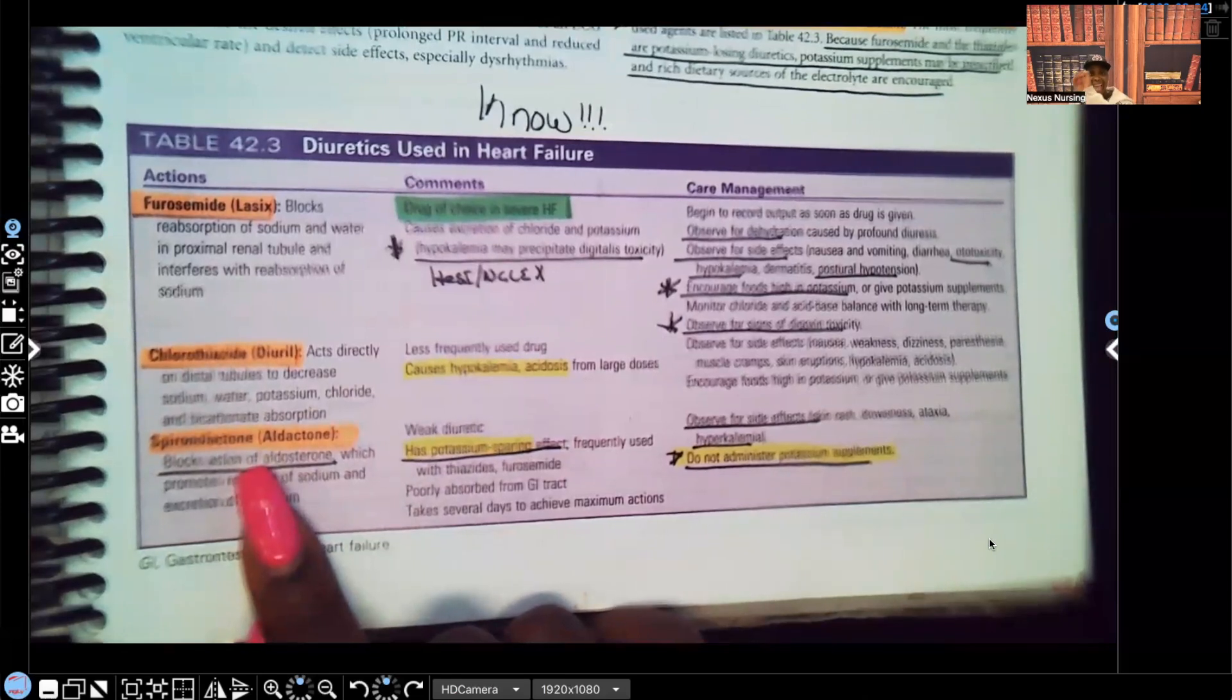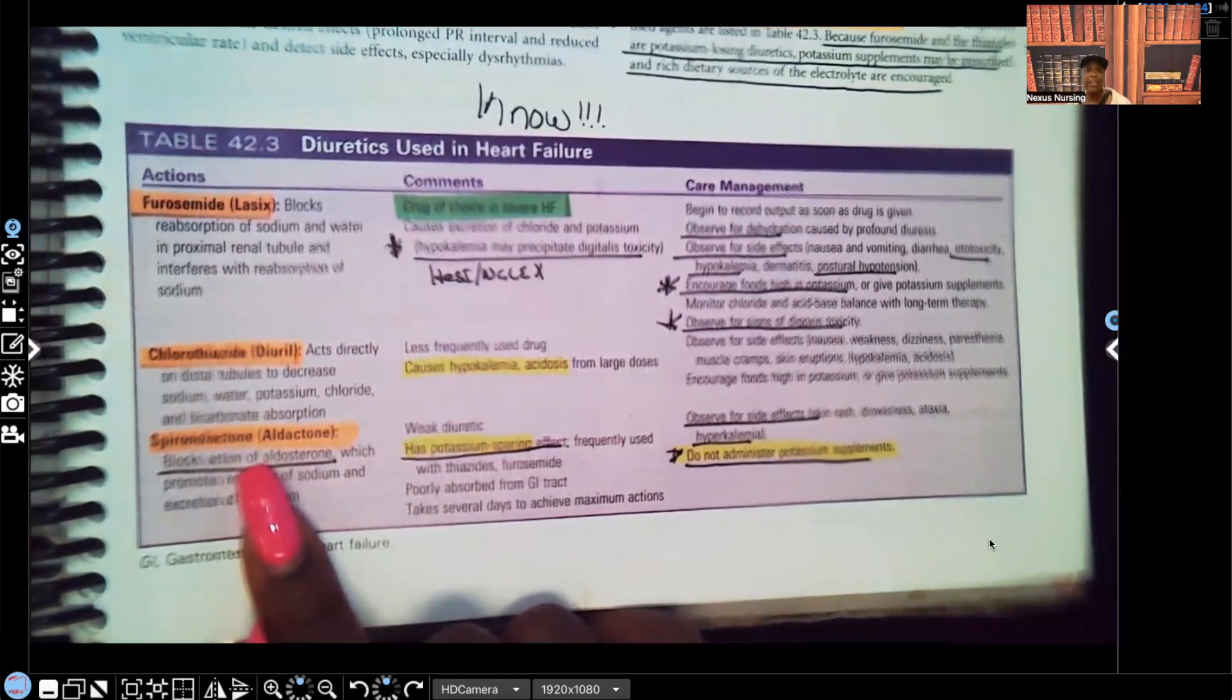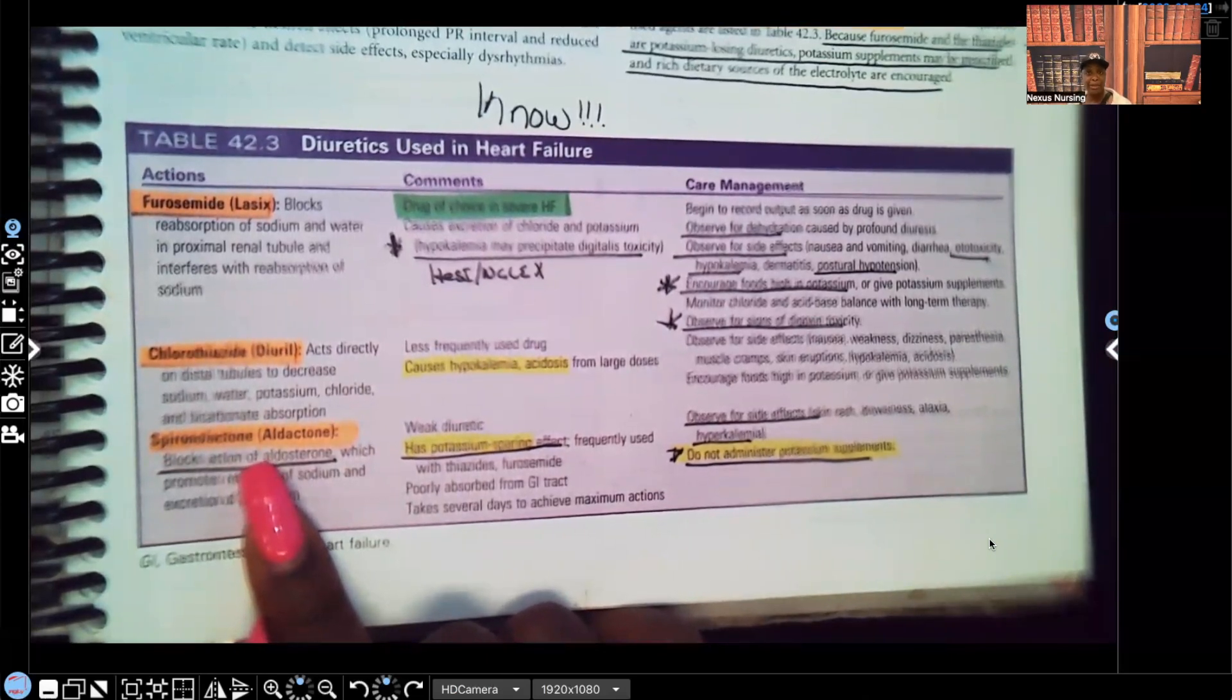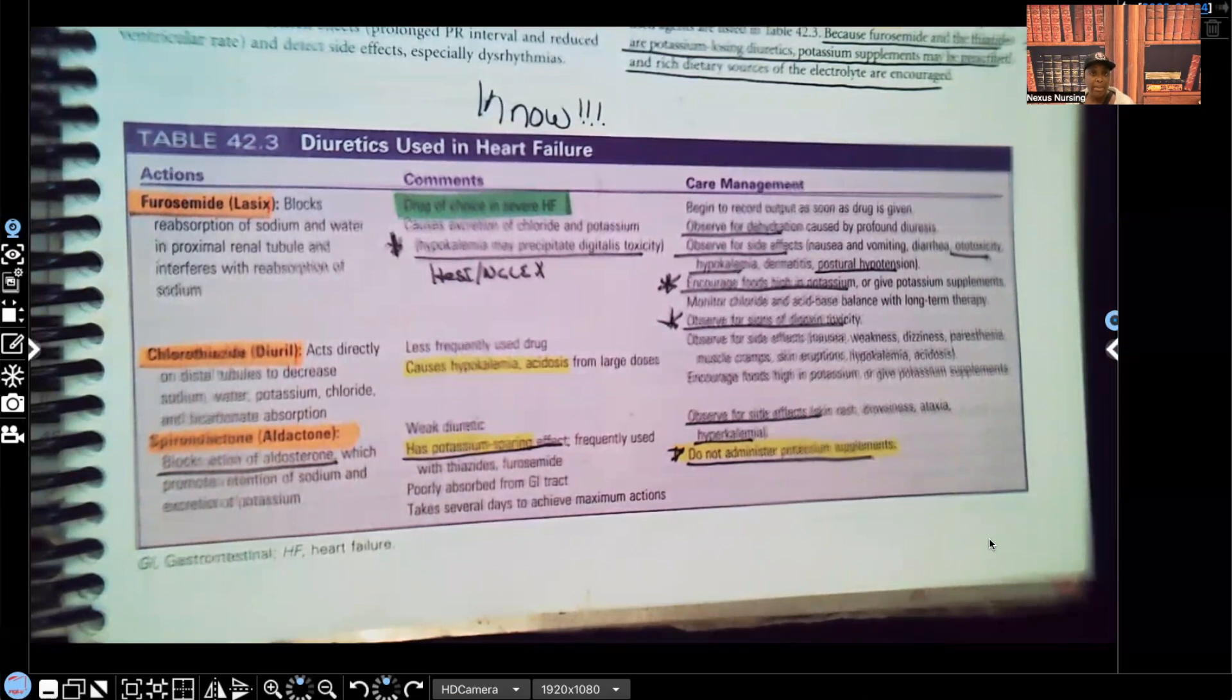And last is the spironolactone, the aldactone. That S in spironolactone stands for sparing, stands for saving. Saving what? Potassium. So here we are, the drug of choice is Lasix where the patient will lose potassium, but here's another type of drug that may possibly be ordered and it does the opposite. It saves potassium. It could cause the patient's potassium to be higher than five. Remember the therapeutic range is 3.5 to 5, so spironolactone can cause that patient to have hyperkalemia.